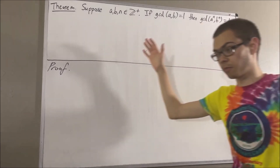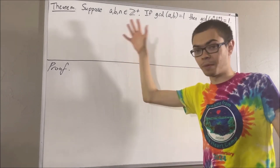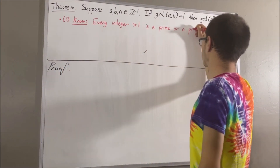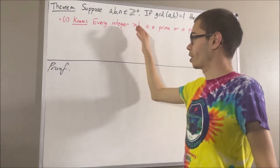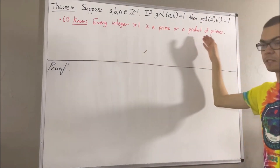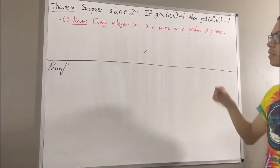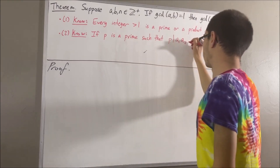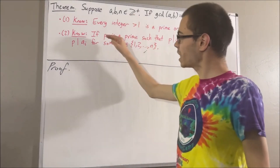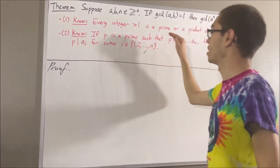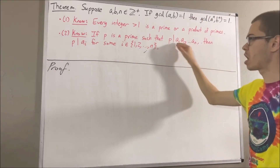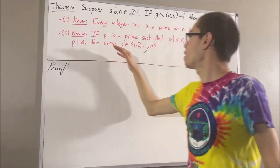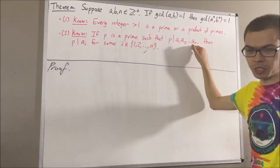In proving this theorem, we are going to use some facts regarding prime numbers. Here's the first one: every integer greater than 1 is a prime number or a product of prime numbers. Here's the second fact: if p is a prime number such that p is a divisor of a product of a list of integers, then p is a divisor of at least one of those integers being multiplied.